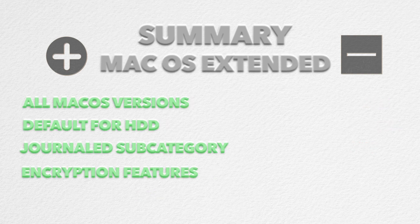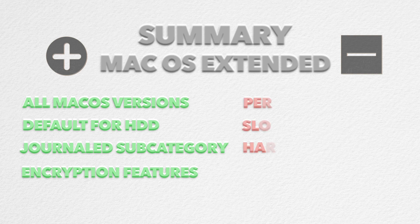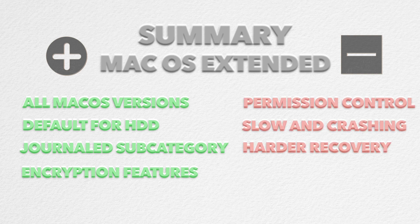On the other side, macOS Extended — also known as HFS Plus — is supported by all versions of macOS and is the default system for mechanical and hybrid hard drives. As an extra, it has a journaled subcategory feature which helps you avoid file system corruption, and it also has encryption capability. On the downside, there is no access to permission control, it performs much slower, and it can crash when dealing with a large number of files. It can also be difficult for data recovery when something goes wrong.